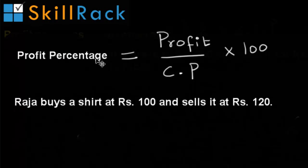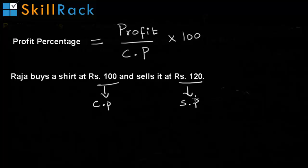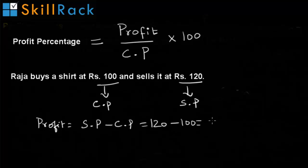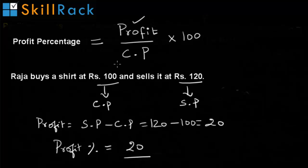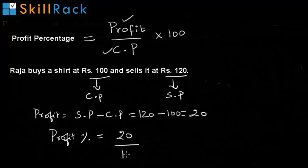Profit percentage is defined as profit multiplied by 100 divided by cost price. In this example, the cost price is Rs. 100 and the selling price is Rs. 120. So, the profit is selling price minus cost price, which is Rs. 20. We calculate the profit percentage using the formula: profit is Rs. 20 divided by cost price Rs. 100, multiplied by 100. The Rs. 100 cancel out and the profit percentage is 20%.